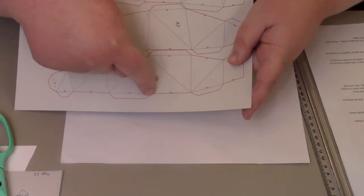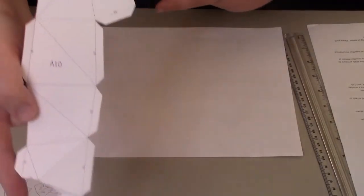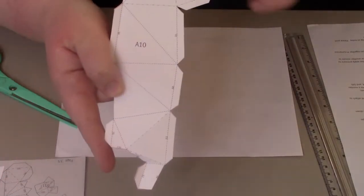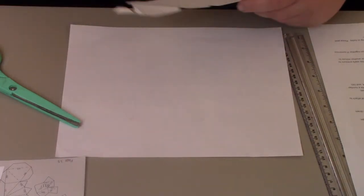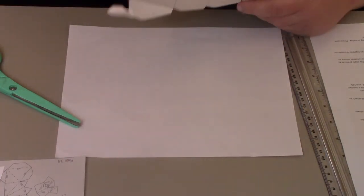Red solid lines are to be cut with scissors. The dotted blue lines indicate a valley fold. The green dot and dash lines indicate a mountain fold.